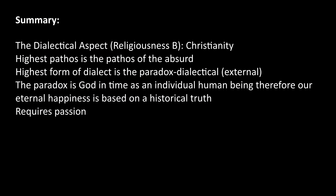So that's my spiel about Religiousness B, the paradox and the absurd. Summary: first we looked at the dialectical aspect — Religiousness B — which was essentially Christianity. The highest pathos here is the pathos of the absurd, and the highest form of dialectic is the paradox dialectical, which became an external relationship. So it went from aesthetic external, to ethical and Religiousness A which were both internal, and then with Religiousness B we've gone external again with the paradox dialectical. The paradox is God existing in time as an individual human being; therefore our eternal happiness is now based on a historical object of truth. To hold on to and grasp this paradox as a paradox requires passion — specifically the passion of faith.